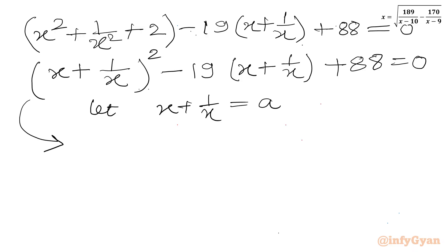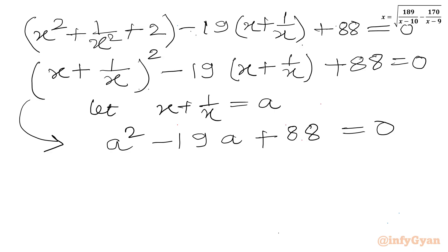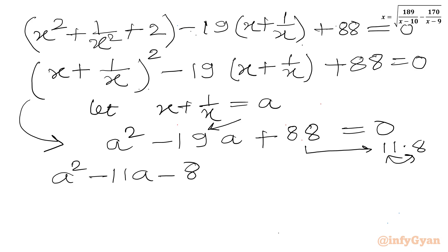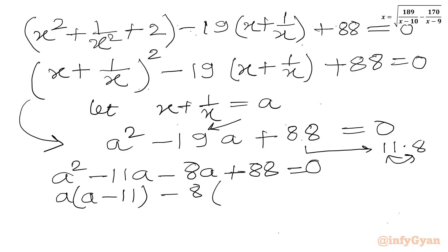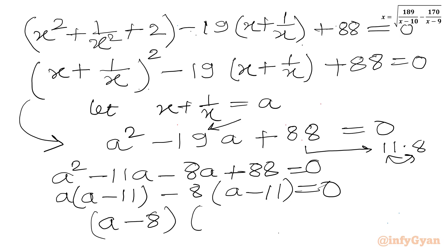So we get one quadratic equation in a: a² minus 19a plus 88 equal to 0. We can use factorization. The factors of 88 are 11 times 8, and 11 plus 8 equals 19. So we write a² minus 11a minus 8a plus 88 equal to 0. Taking common factors: a(a minus 11) minus 8(a minus 11) equal to 0, giving (a minus 8)(a minus 11) equal to 0. So a equal to 8 or a equal to 11.